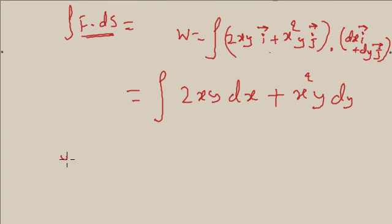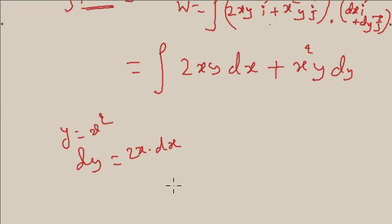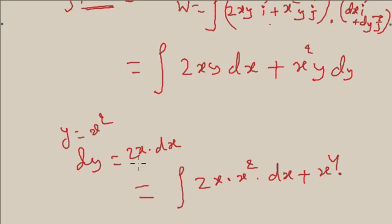Now you know the line is y equals x square, so dy is equal to twice x into dx. If you put this formula here, you will get, if you want to put only one variable here, replace y with x. You will get twice x into x square dx plus x square y means x to the power 4, and dy means twice x dx.